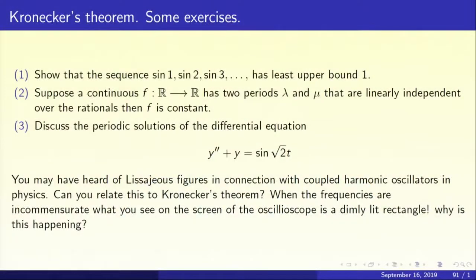As a first exercise, let us show that sin 1, sin 2, sin 3, etc. has least upper bound 1. It is clearly bounded above by 1. But to show 1 is the least upper bound, we must show that given any epsilon greater than 0, some element of the sequence lands in the interval 1 minus epsilon to 1, no matter how small epsilon is. Kronecker's theorem is critical in the proof of this. You should convince yourself that 1 is indeed the least upper bound.